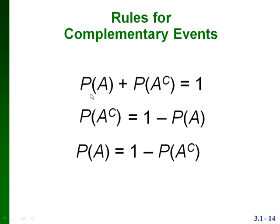Some rules for complementary events involving probabilities: since an event and its complement have to add up to the whole sample space, the probability of an event plus the probability of its complement must add up to one, because the probability of the whole sample space is one. This gives us the formula: the probability of A complement equals one minus the probability of A. If we already know the probability of an event, we can find the probability of its complement just by subtracting from one.